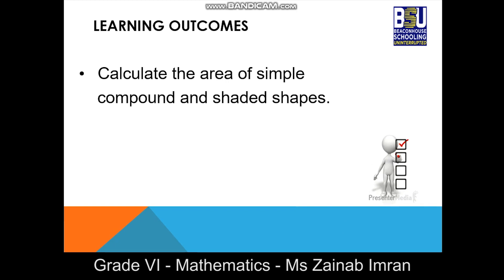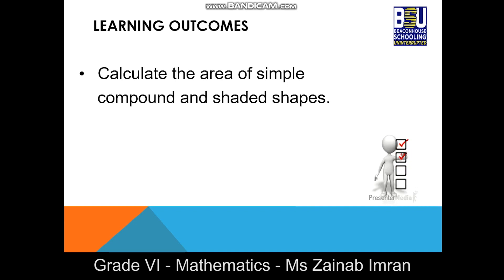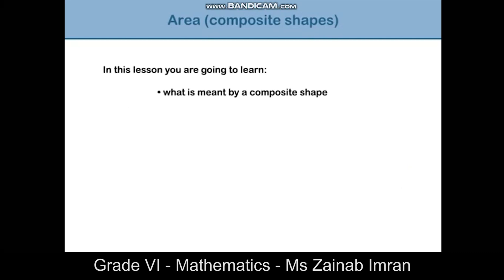Here is an example of a composite shape. This shape is made from a rectangle and a triangle. To get the area of the compound shape, it is necessary to break the shape into smaller parts and then calculate the area of each of the parts individually. First, find the area of the rectangle using the formula: area equals length times breadth.